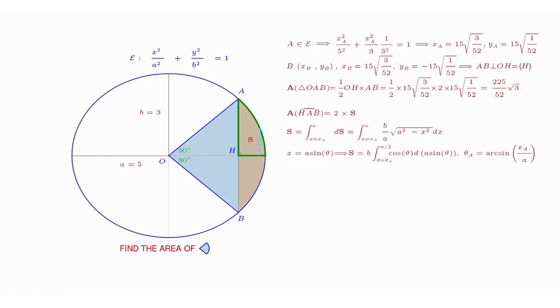After some simplifications, we arrive at the result: S equals half of a times b times theta plus a quarter of a times b times sine of twice theta, for theta ranging from theta_A to pi over 2.